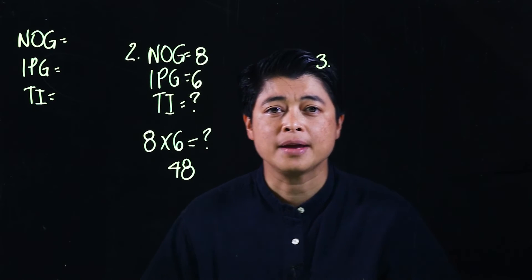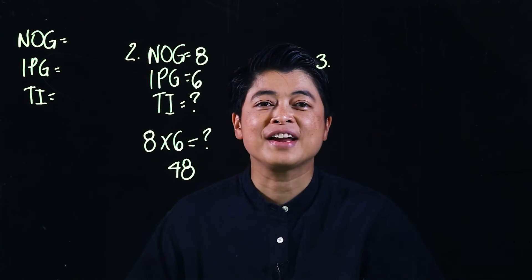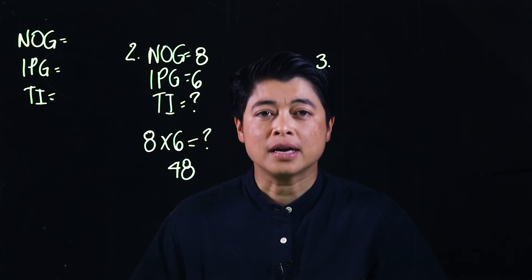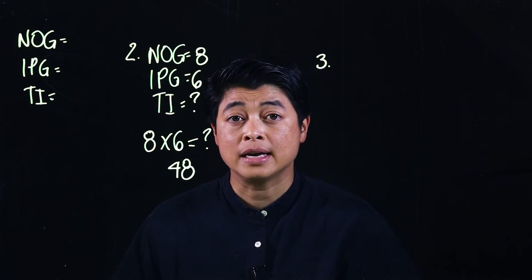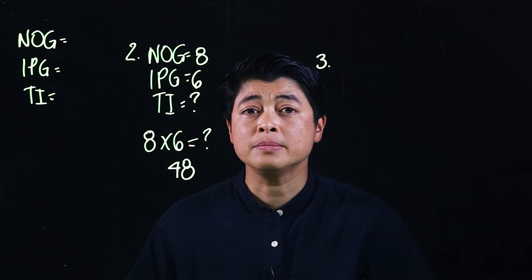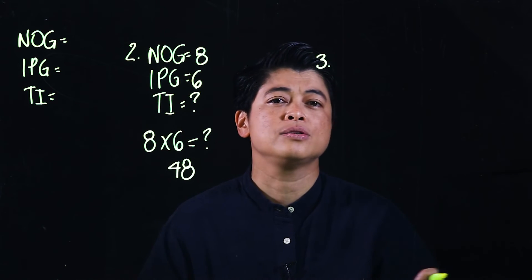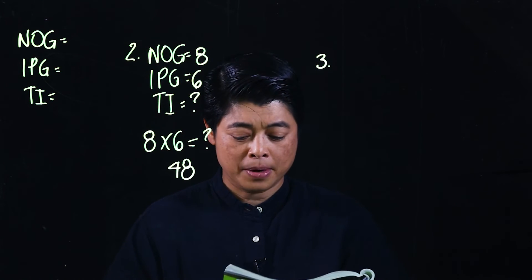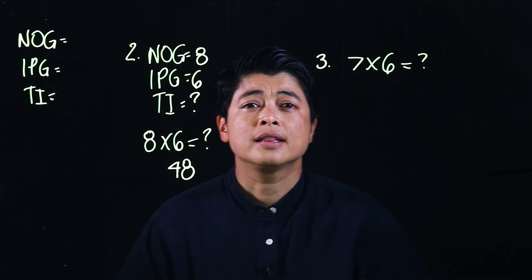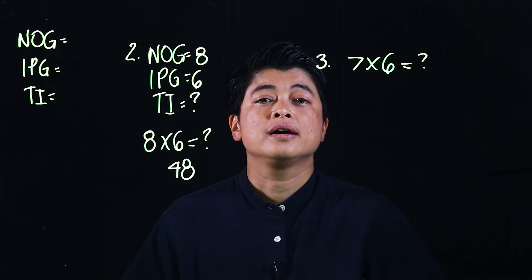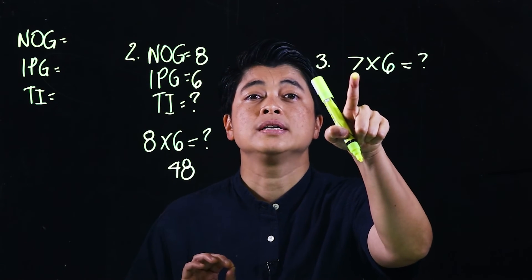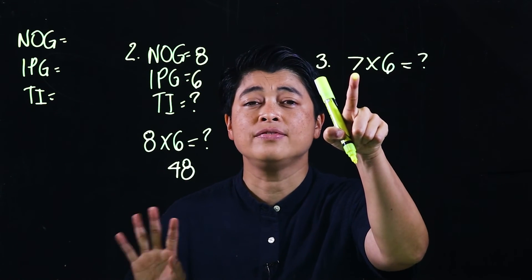Problem 3 — I've already said back in Grade 2 that this type of problem is counterproductive, but since it's part of the lesson we must teach it. If you are homeschooling, I suggest you skip this. Problem 3 asks: what is 7 × 6?